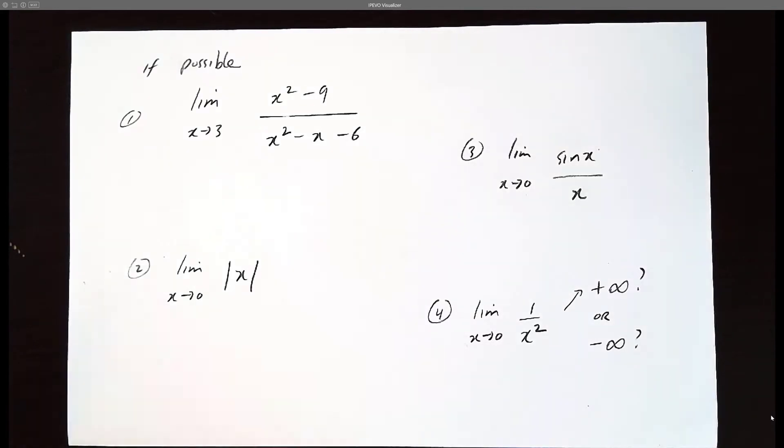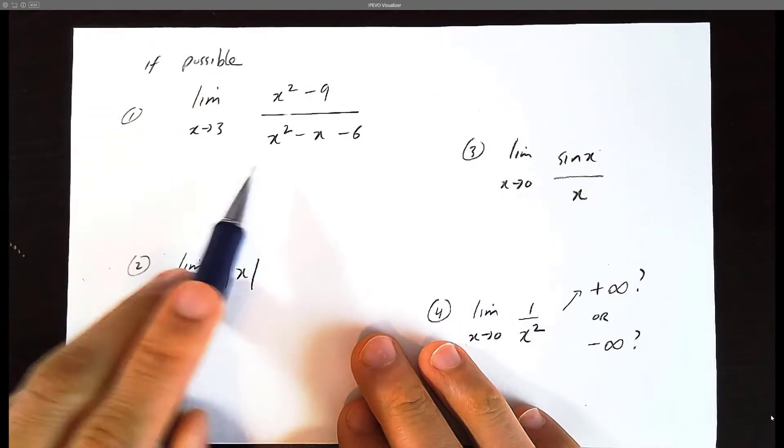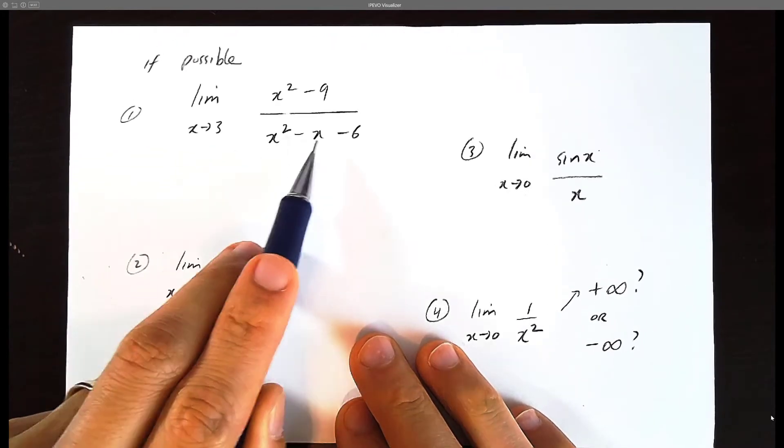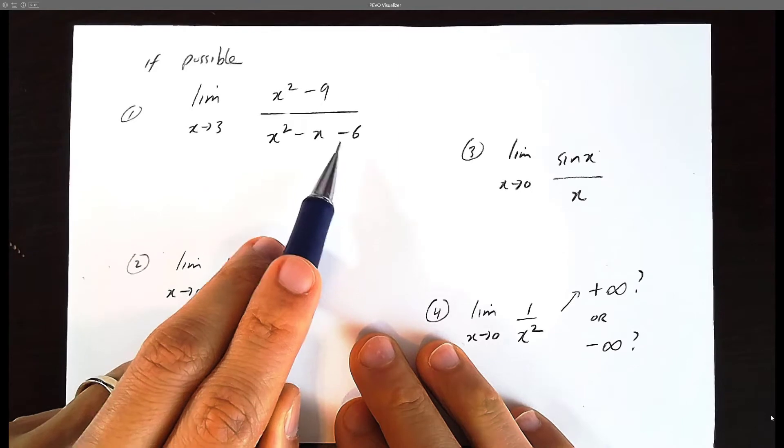Let's practice some limit problems here. The first strategy for limits is to substitute, but when you plug in 3 in the denominator, 3 squared would be 9, minus 3 would be 6, 6 minus 6 would be 0.